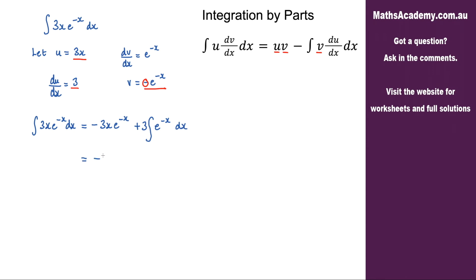So we've got negative 3x·e to the minus x. The integral of e to the minus x — well, we've already done that — the integral of e to the minus x is minus e to the minus x. So here we're going to get minus 3e to the minus x, plus c.